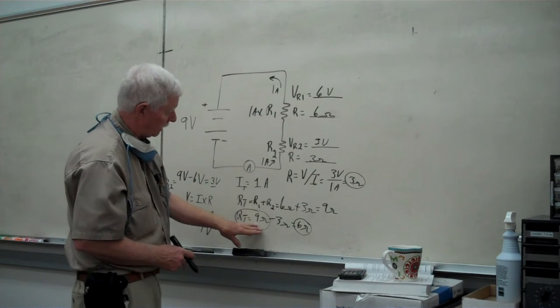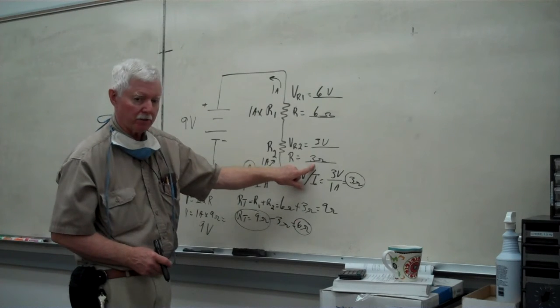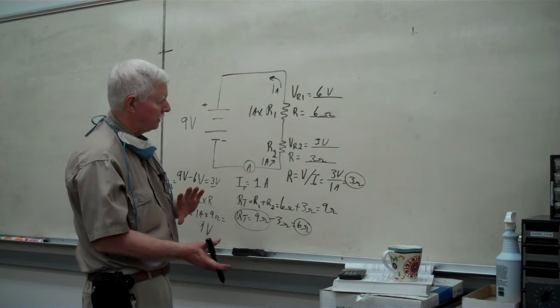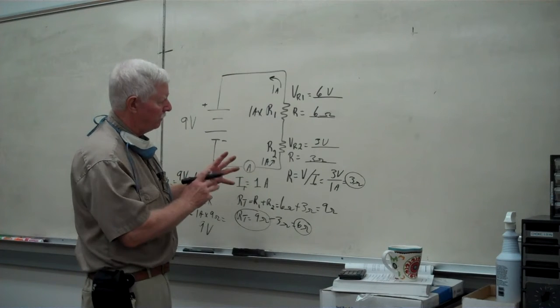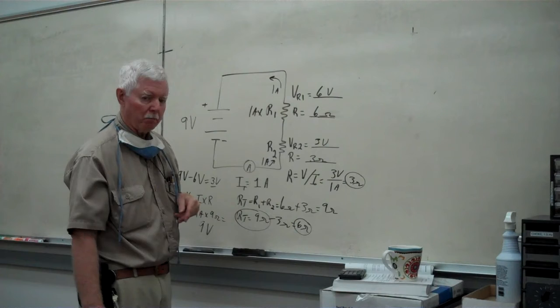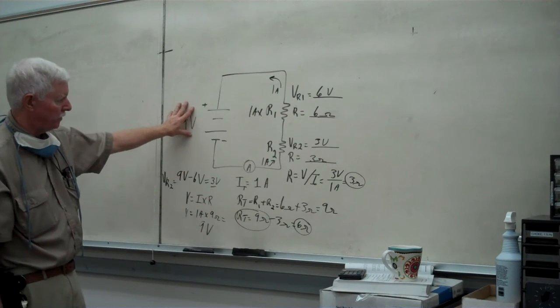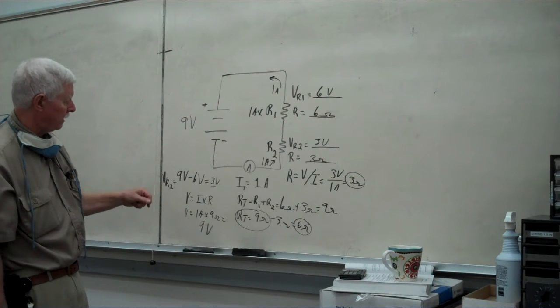If I were to take the 9 ohms and subtract the 6 ohm resistor, I would have come up with a 3 ohm resistor. So, by using the deductive method, we can work these back and forth to see what we have for different values of circuit components, the current that's flowing through here, and applied voltages.